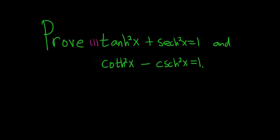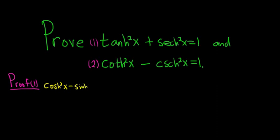I'll call this 1 and we'll call this 2. So let's prove 1 — proof of 1. To prove 1 we'll start by writing down another familiar identity. Recall that hyperbolic cosine squared minus hyperbolic sine squared is equal to 1. Now we're going to come up with this first one here, which involves the hyperbolic tangent. Recall that hyperbolic tangent is hyperbolic sine over hyperbolic cosine.